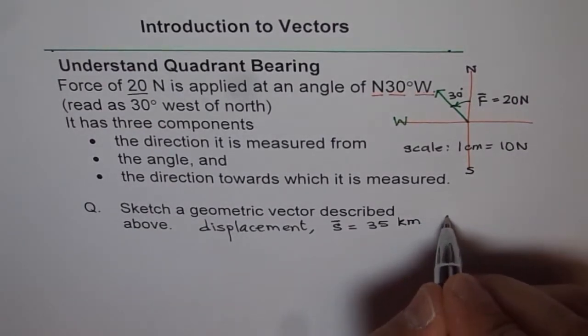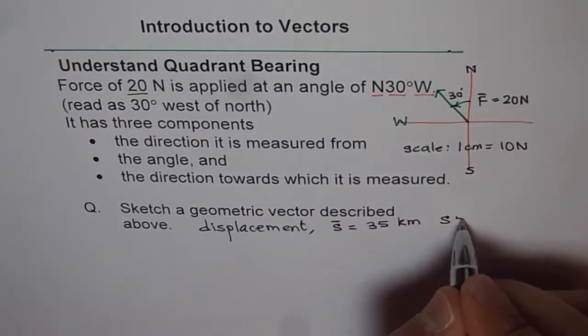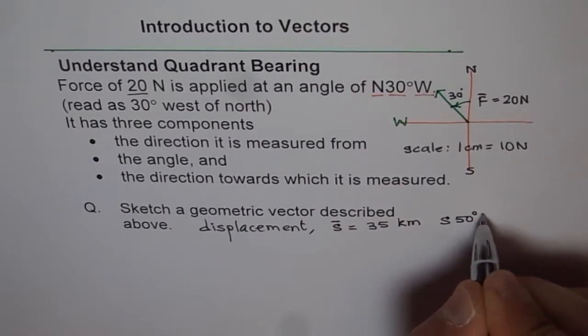Let's represent it by the vector S of 35 kilometer. And the direction I will write just making it different. How will you read this?